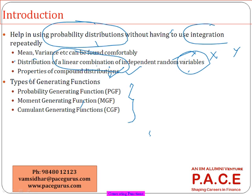As far as the exam is concerned, you may be asked to find the moment generating function for a given distribution. The good thing is that in the actuarial tables, the moment generating function is provided for all common distributions — normal, gamma, log-normal, binomial, Poisson — so you don't need to memorize the MGF formula. The cumulant generating function can be derived from the moment generating function, so it's not separately required.